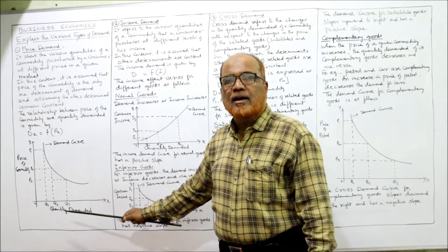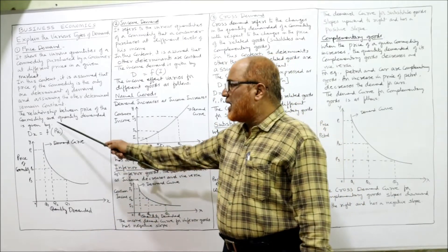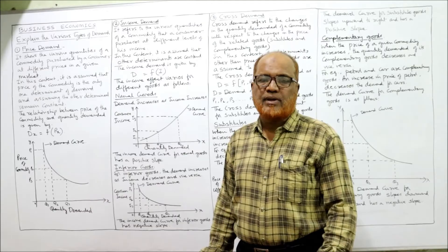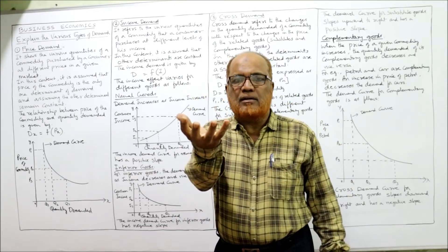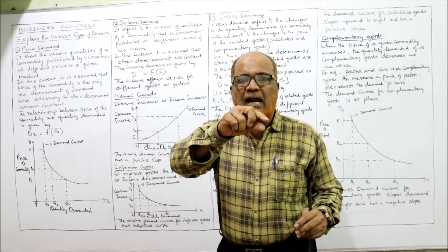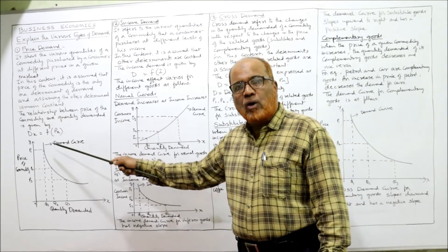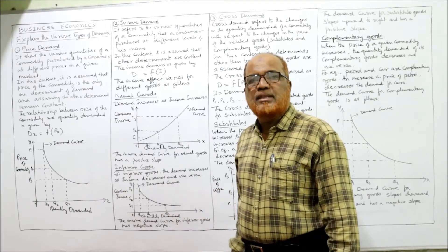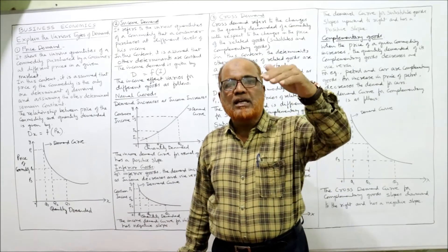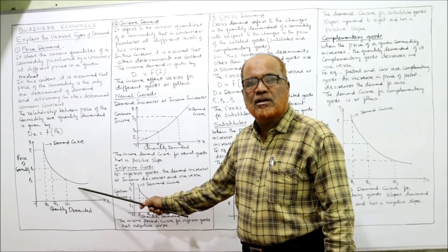This demand function can be shown graphically. On the X-axis, we take quantity demanded; on the Y-axis, we take price. When we plot the pairs of price and quantity demanded, we get the demand curve. This curve is downward sloping from left to right, indicating an inverse relationship between price and demand.